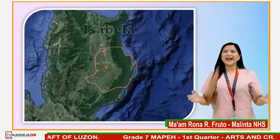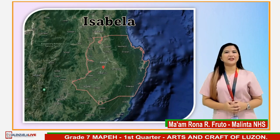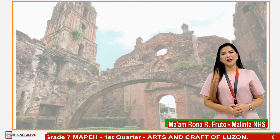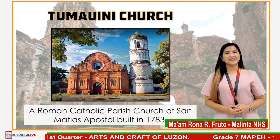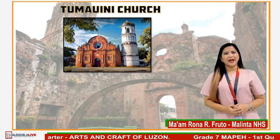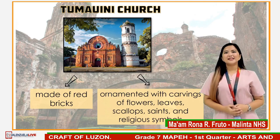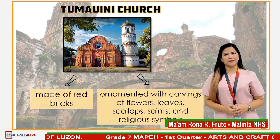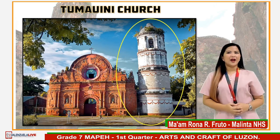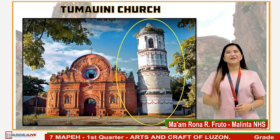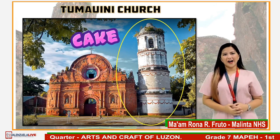The next province to explore is Isabela, one of the largest provinces in the Philippines. Tumawini Church is a Roman Catholic Parish Church of San Matthias Apostol built in 1783. It is made of red bricks ornamented with carvings of flowers, leaves, scallops, saints, and religious symbols. The cylindrical belfry of the church looks like a huge wedding cake with laces, hearts, and beads.